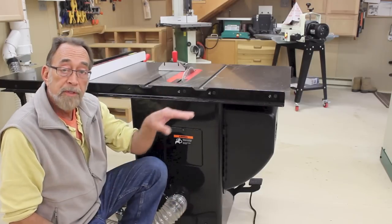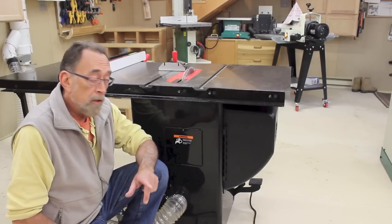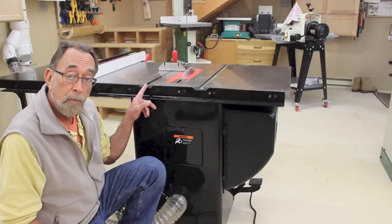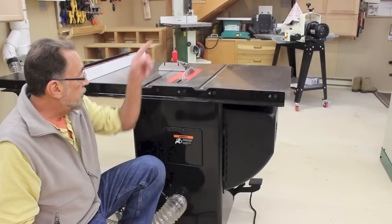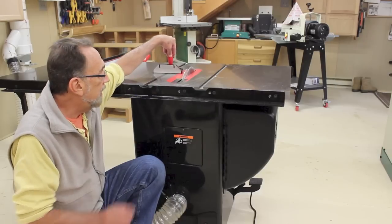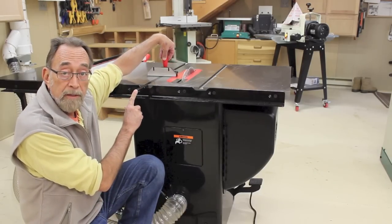Of course, you want your outfeed table to be the same height as the table saw or just slightly below it so that the boards can slide easily onto the outfeed table. You also are probably going to have to make some notches that line up with the miter gauge slots so that as you push your miter gauge or crosscut sled through a cut, there's a place for the bar to go without knocking into the table.